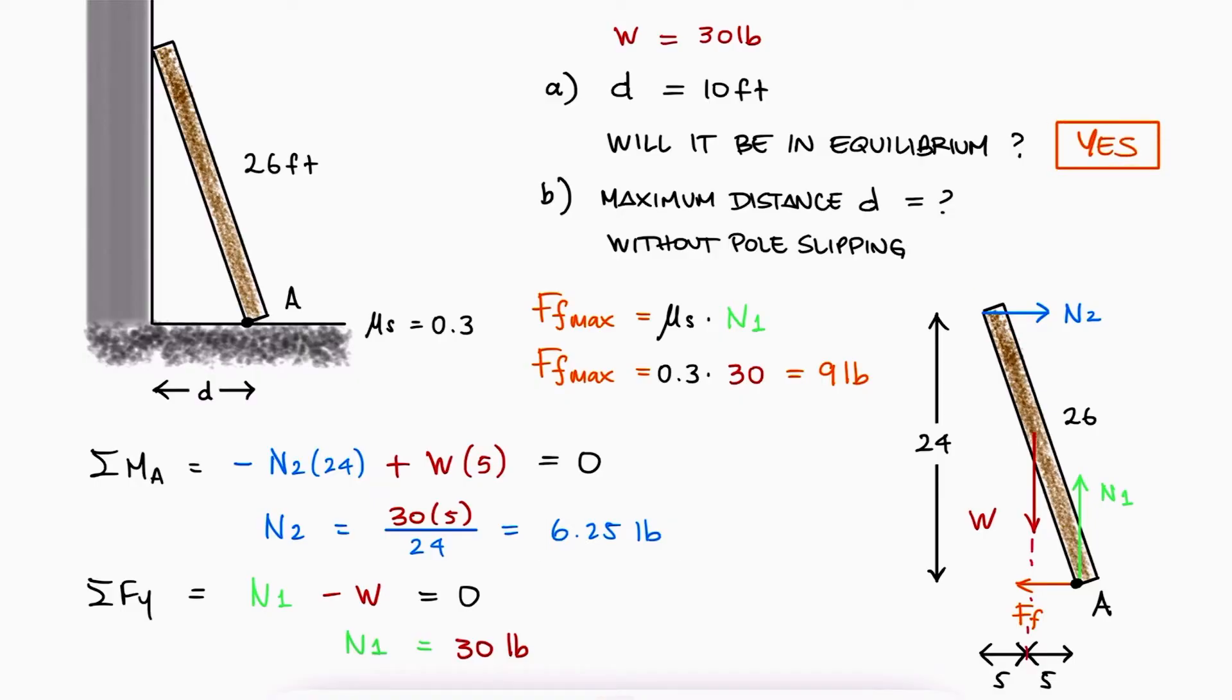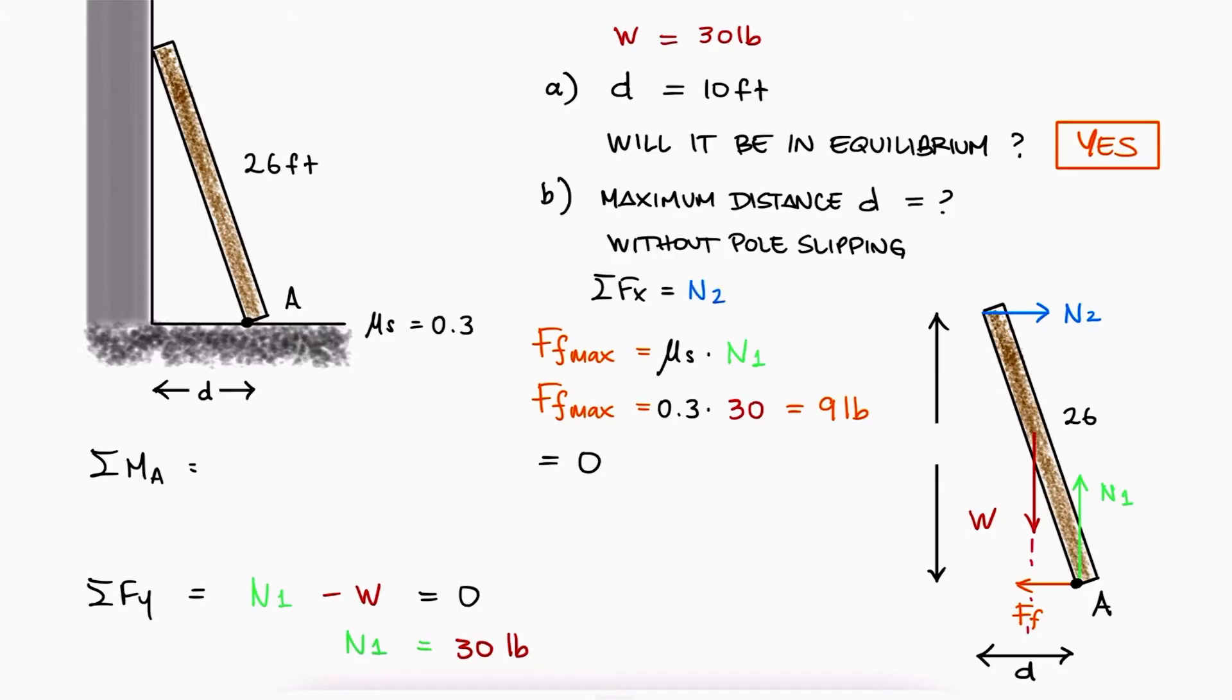For the second question, we know that regardless of the distance D, the normal force 1 is still 30 pounds. Therefore, the maximum friction force is still 9 pounds, which means that the normal N2 at that maximum distance D should also be 9 pounds.